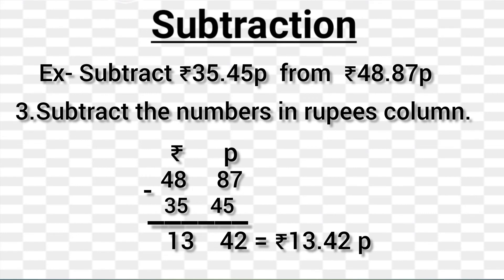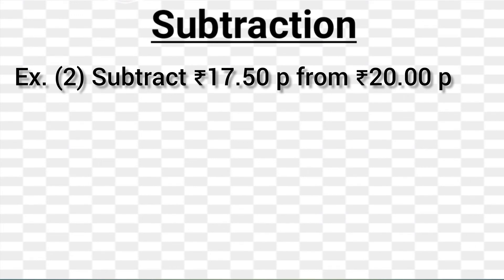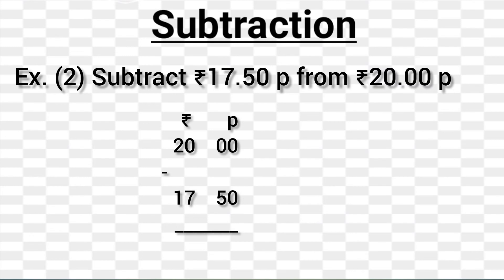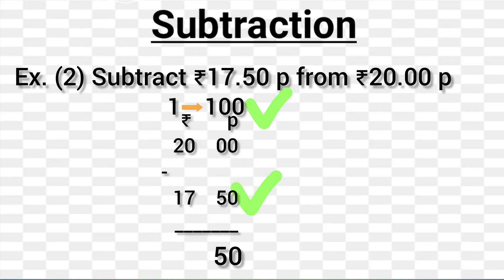Let's discuss another example: subtract 17 rupees 50 paise from 20 rupees. Step 1: Arrange the rupees and paise in column form. Step 2: As 50 paise cannot be subtracted from 0 paise, we borrow 1 rupee (that is 100 paise) from the rupees column. Now subtract 50 paise from 100 paise — we get 50 paise.